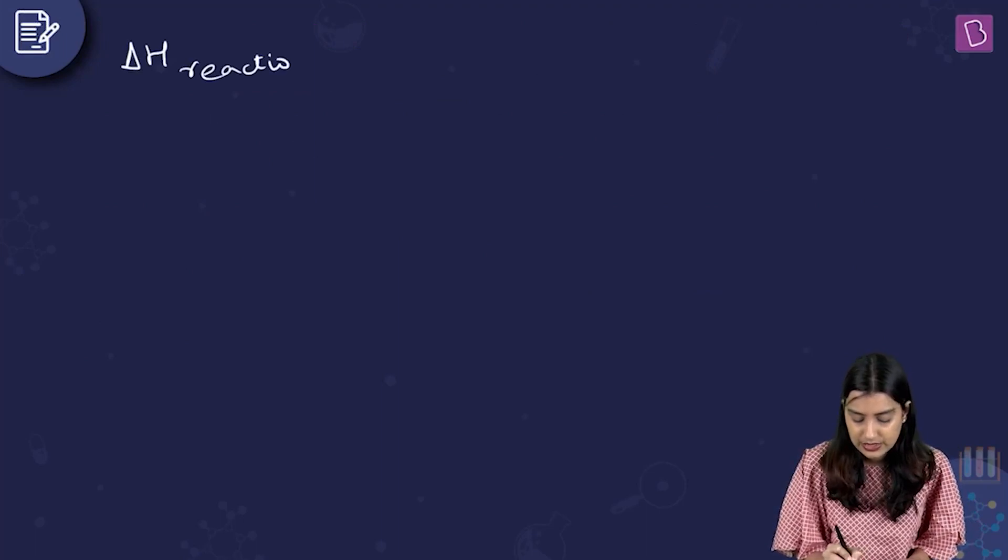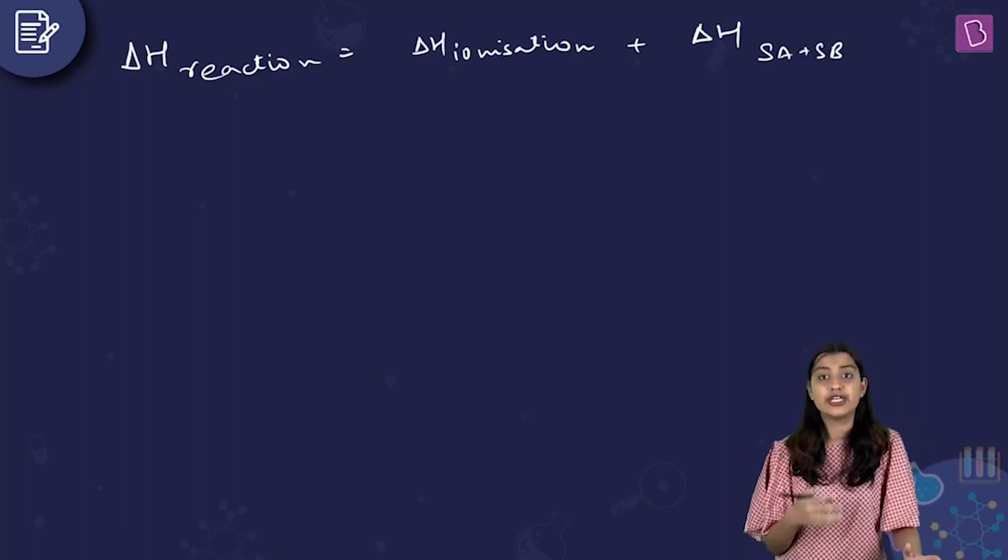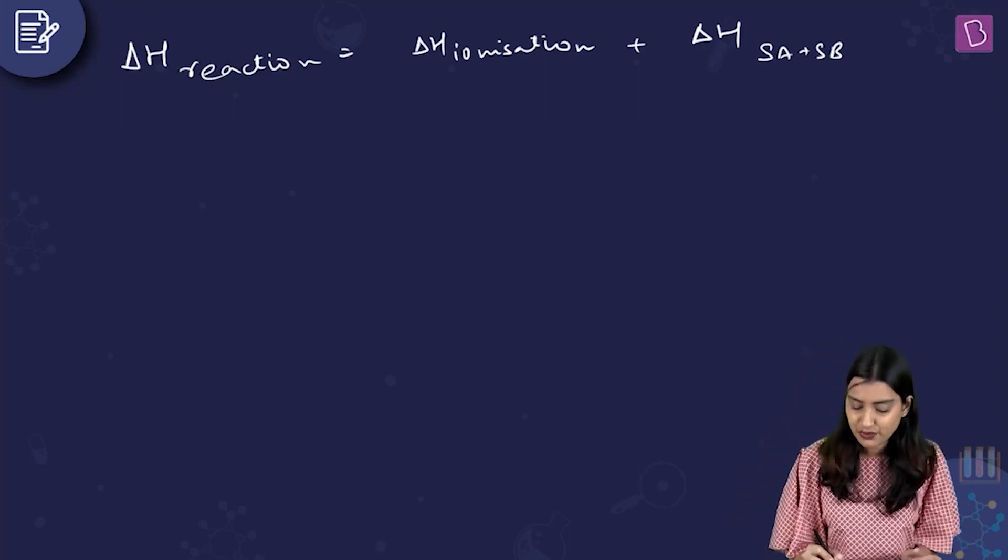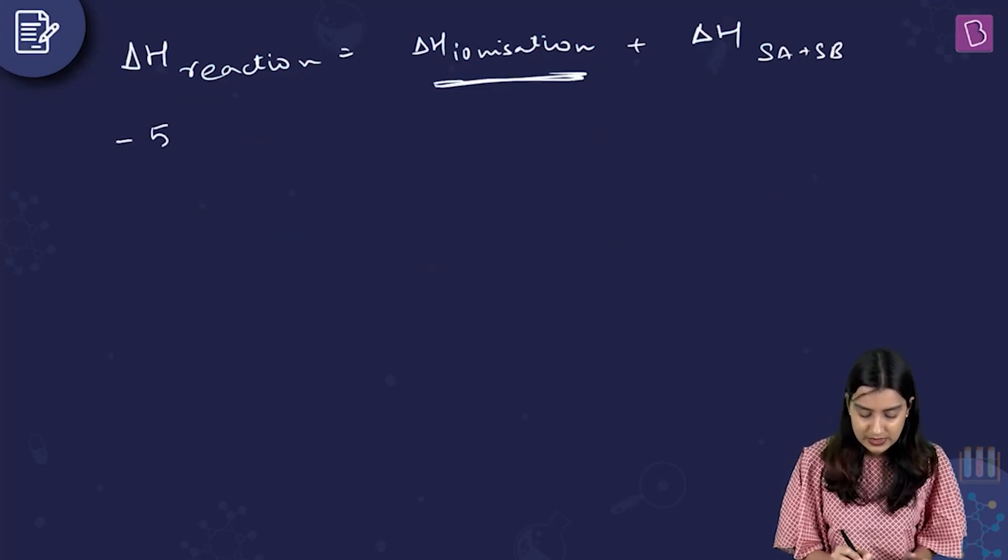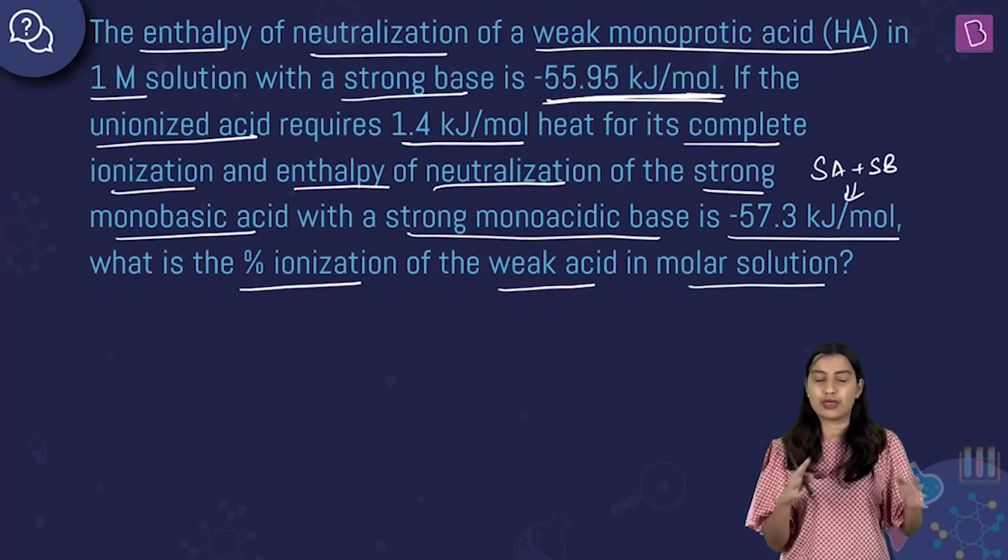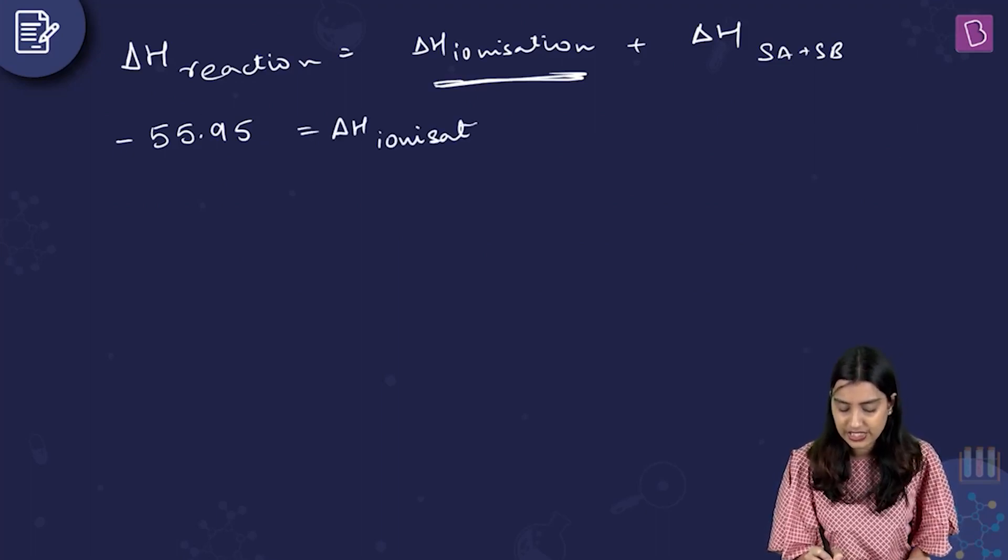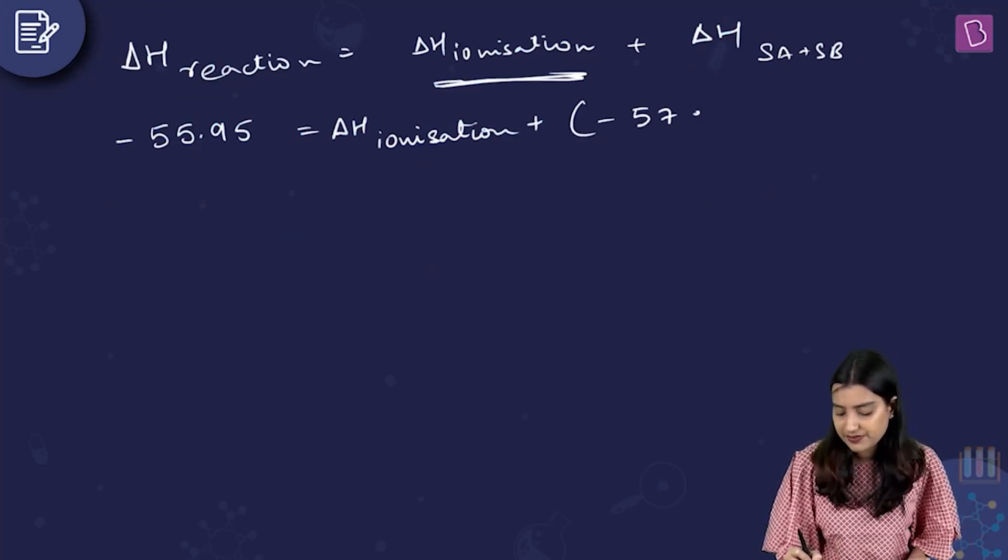Basically, you need to know that delta H of reaction is equal to delta H ionization plus delta H of strong acid strong base. That's basically your heat of neutralization of ideal condition - complete reaction of H plus and OH minus. You have to find out this value. Two other values are given to you. This is equal to delta H ionization plus what is your delta H of ideal condition. You have minus 57.3.